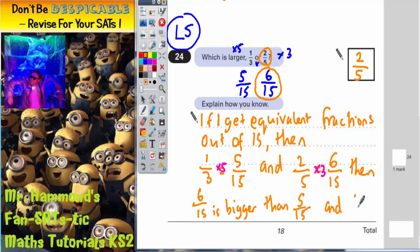Then, 6/15 is bigger than 5/15. And 6/15 comes from 2/5. So that's a complete explanation as to why 2/5 is bigger.